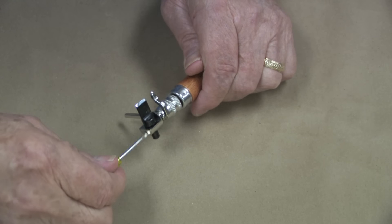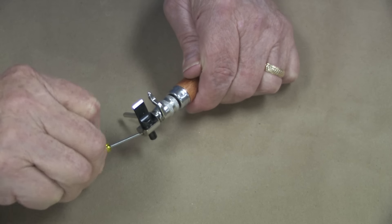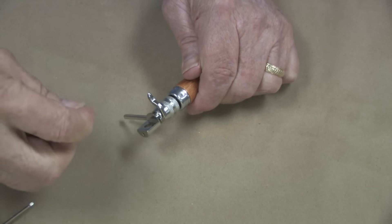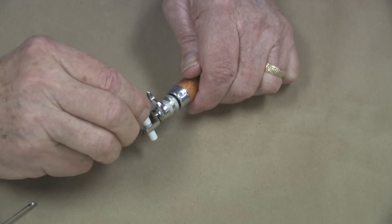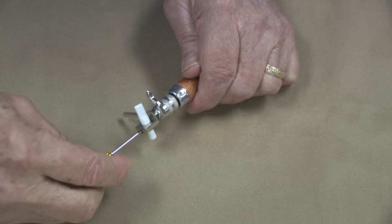Changing blades is easy too. Simply loosen the screw, remove the blade, put in the blade of your choice, properly align it with the handle and the guide, and with the little screwdriver tighten it back up in place.